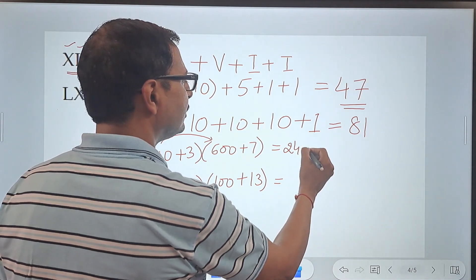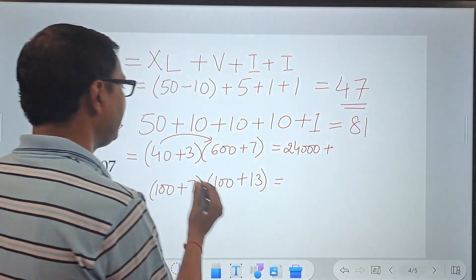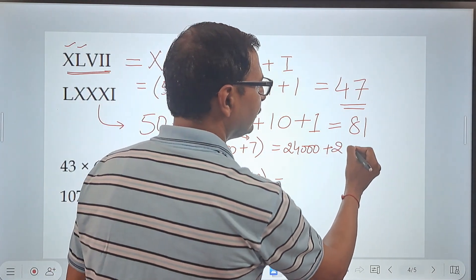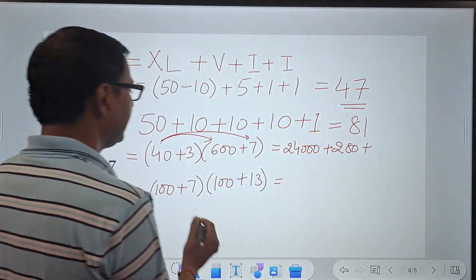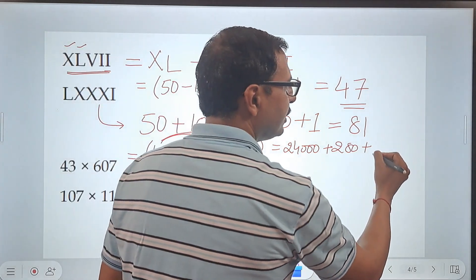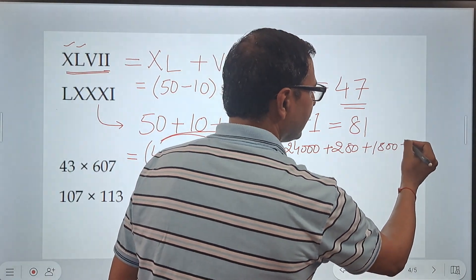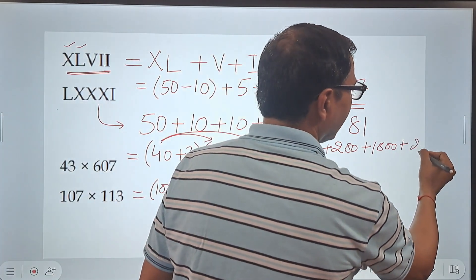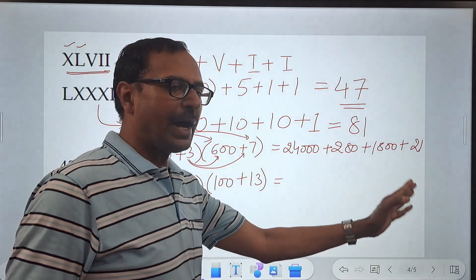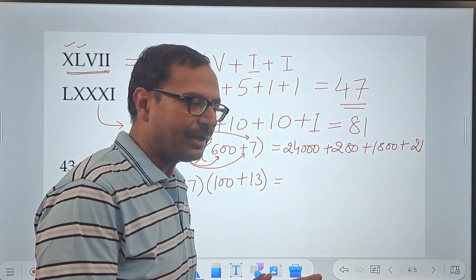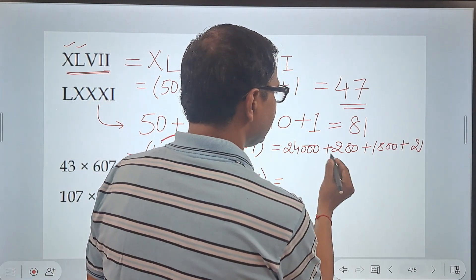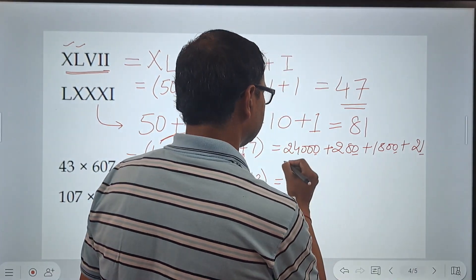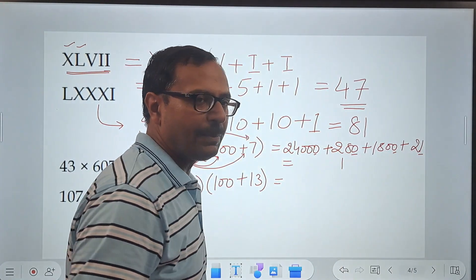Then if you multiply 40 by 7, you get 280. And then you multiply 3 by 600, you get 1800. And finally, you multiply 3 by 7, you get 21. And all you have to do is to add these numbers to get to our final answer. You can see 0, 0, 0. So we have a 1 here. This gives us 1 in the unit place.